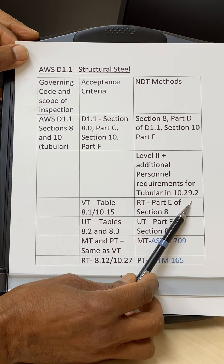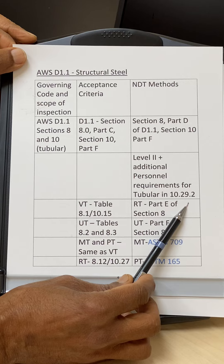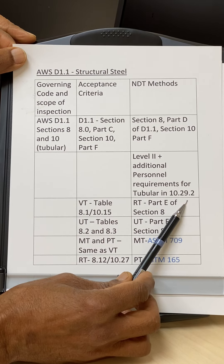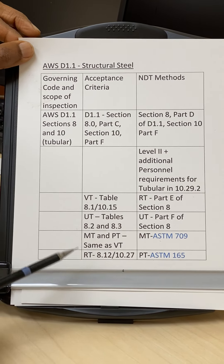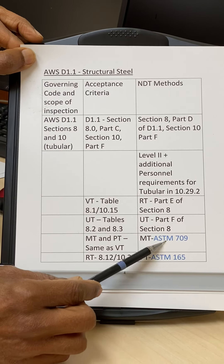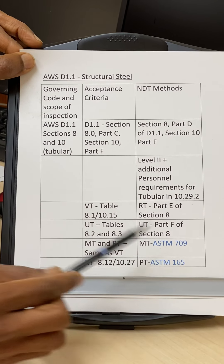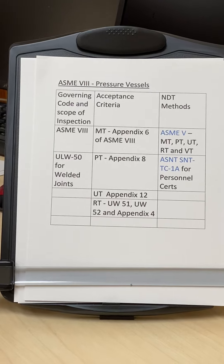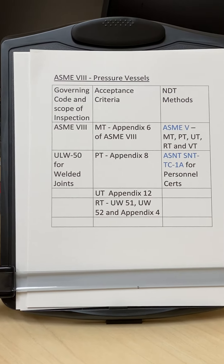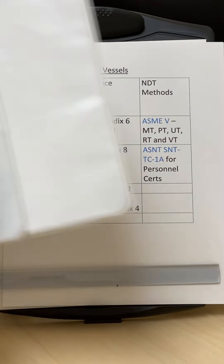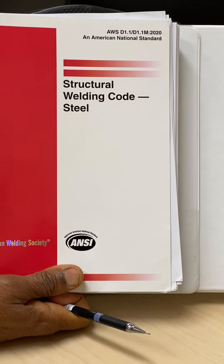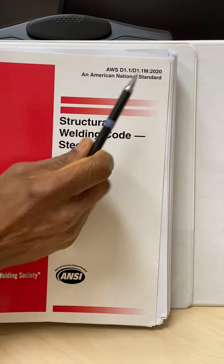For TKY structures, D1.1 requires additional personnel requirements given in Section 10.29.2 — basically requiring you to take a test on a mock-up and achieve 70% or higher on the practical test. For PT, they refer you to ASTM standards. This is what D1.1 looks like — it is a huge book; this is the 2020 edition.